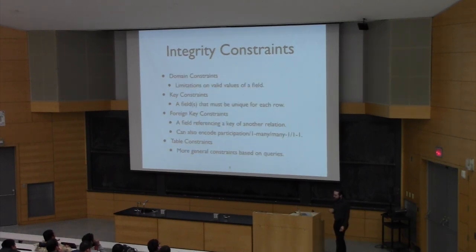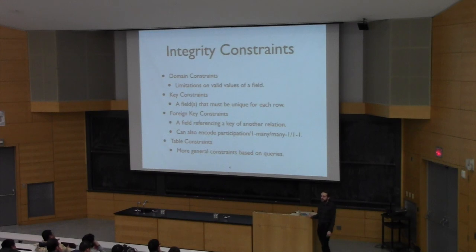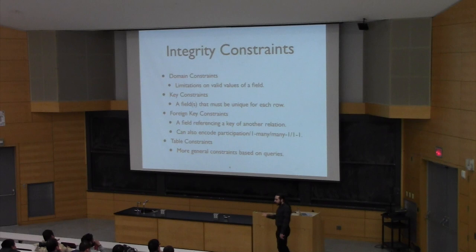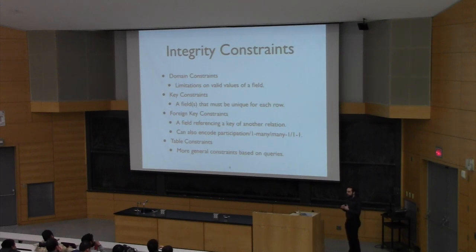We're going to talk today about four different kinds of constraints. The first, domain constraints, apply to individual values. These tell us properties that individual values can satisfy that are stronger than just the basic type information. For example, grades on a zero-to-four scale — a grade of five is invalid. We could place a domain constraint on that value that says grades can only be greater than or equal to zero and less than or equal to four.